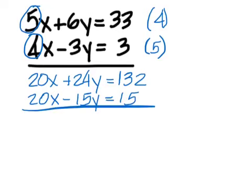20x and 20x, if you add them, you get 40. But if you subtract, you get 0. That's what we want. Now, 24y minus a negative 15 should be 39. And 132 minus 15 is 117.